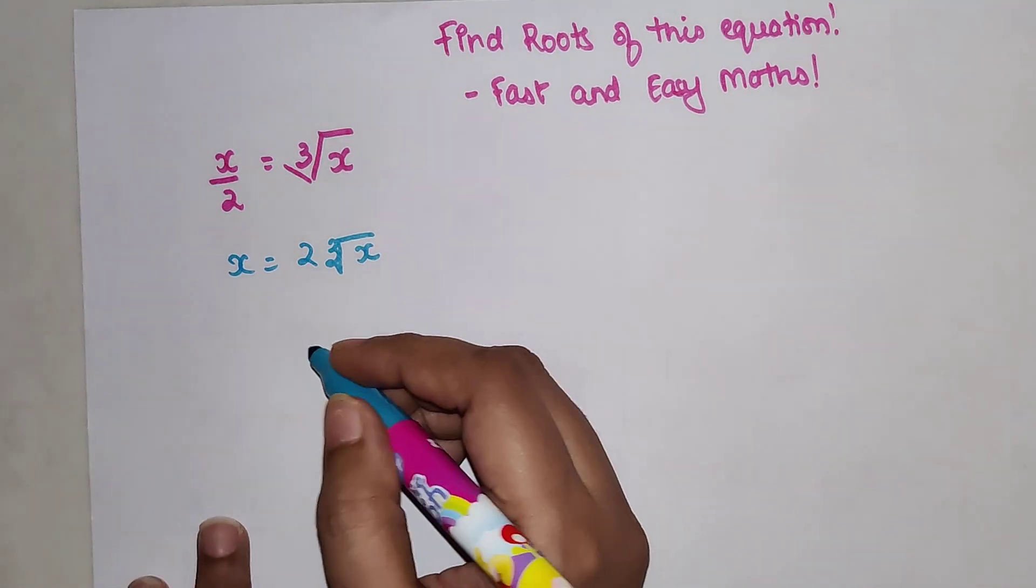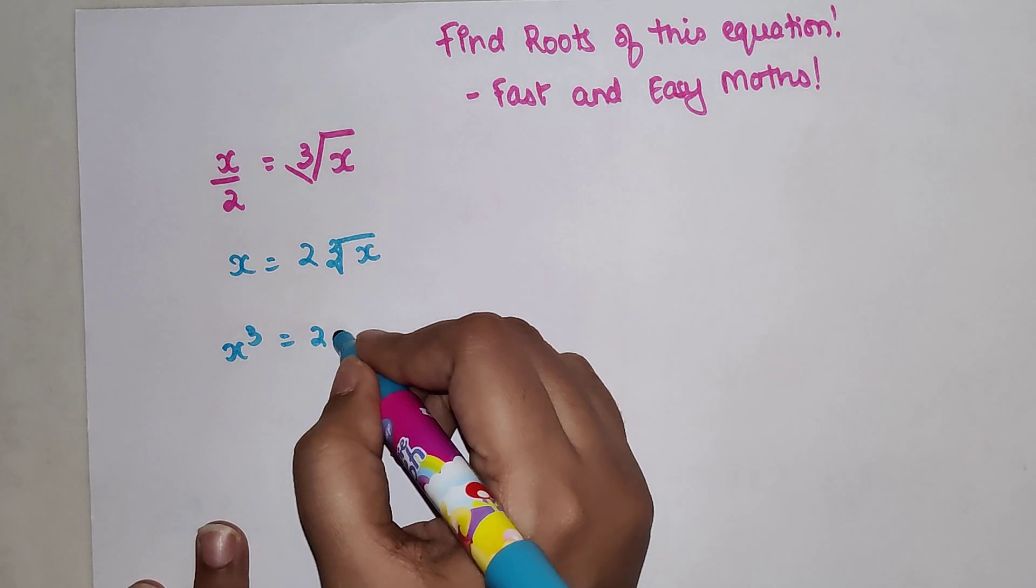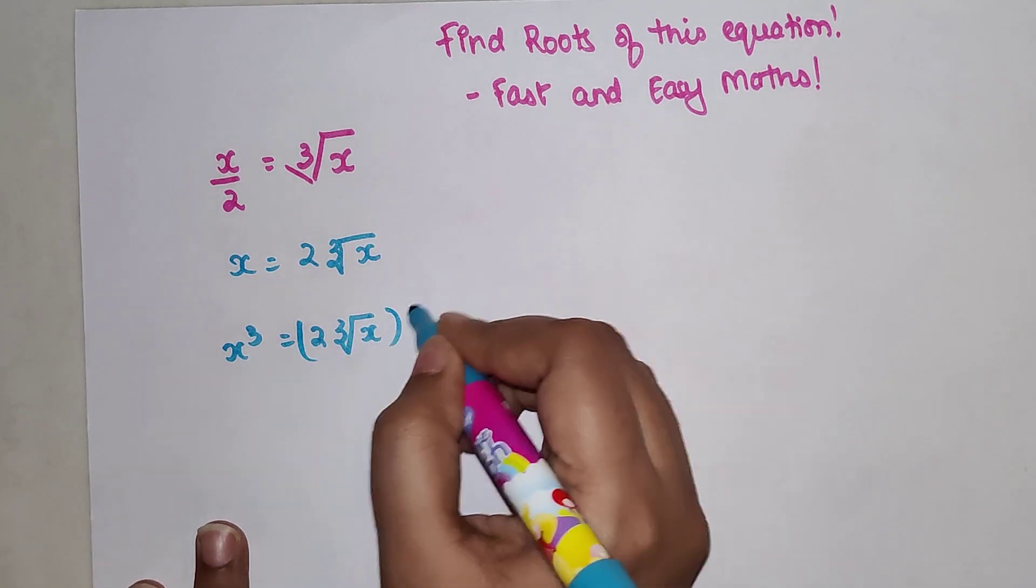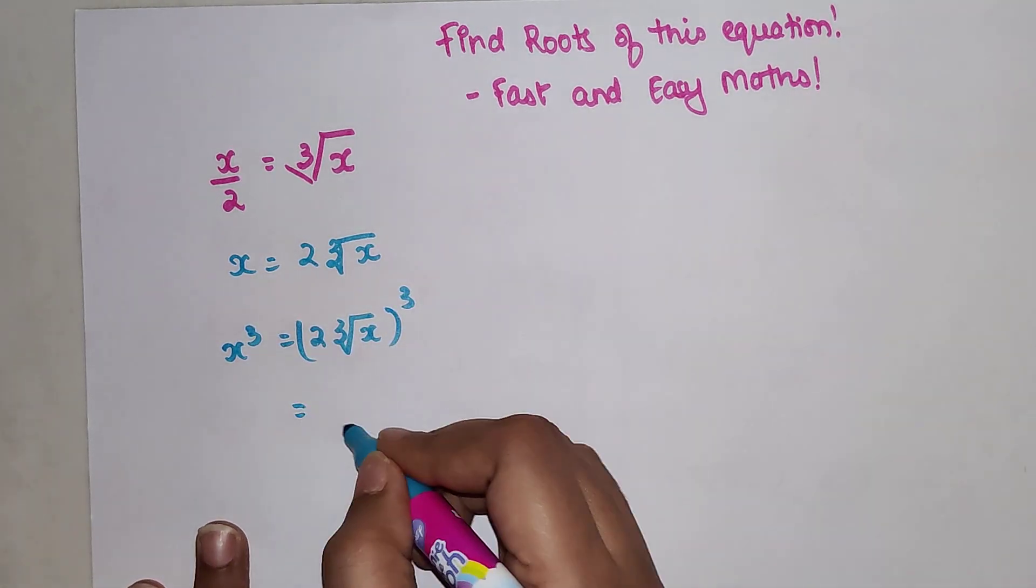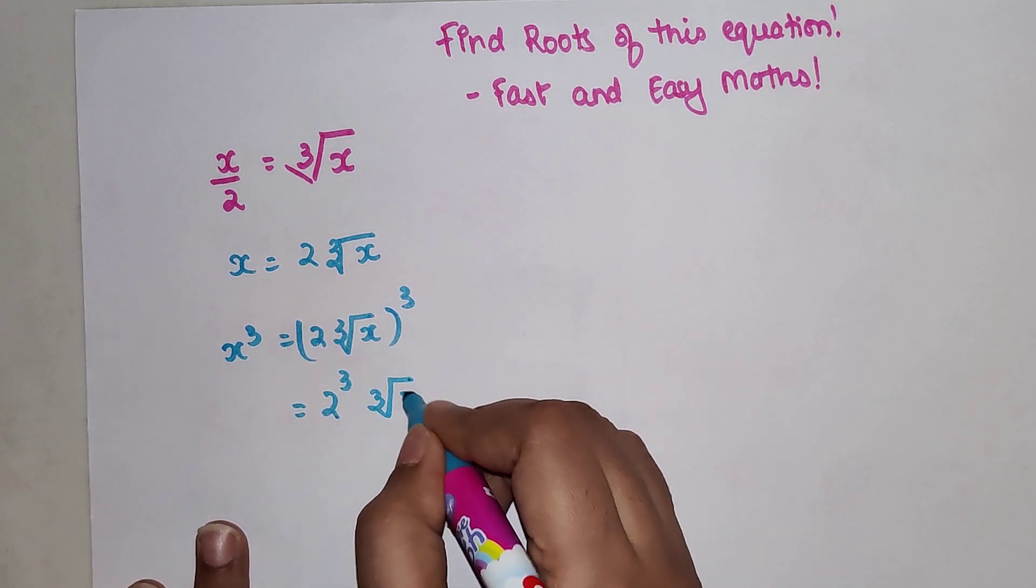We get x cubed equals 2 times cube root of x, the whole cubed. So this gets split, so this becomes 2 cubed and cube root of x raised to 3.